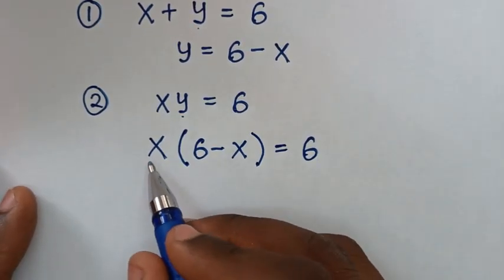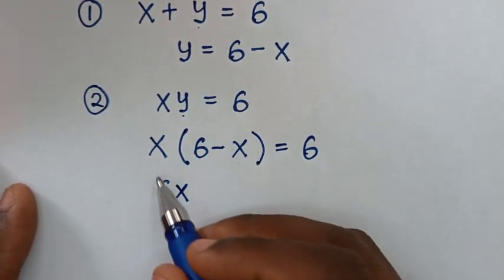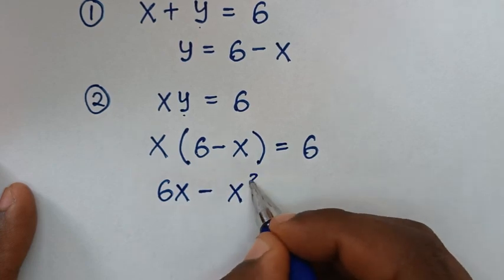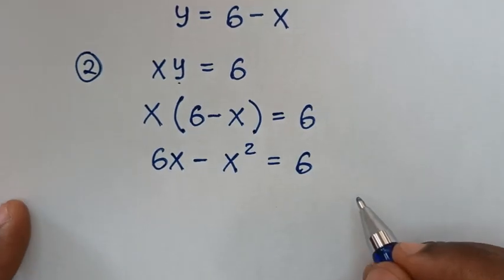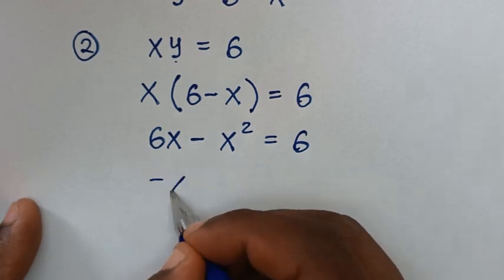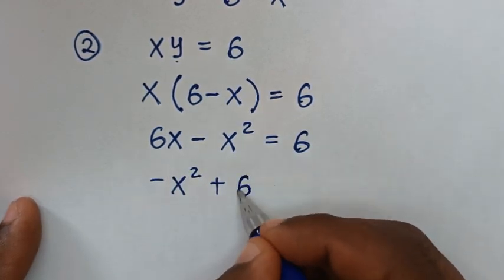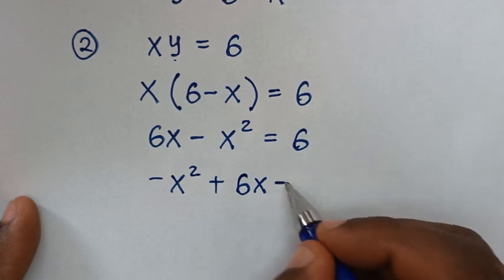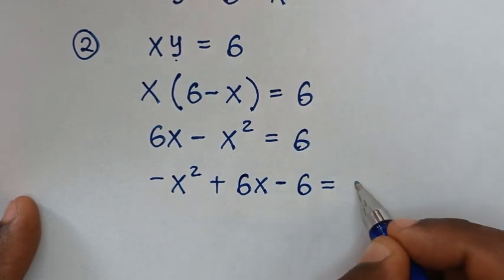Expanding the brackets: x times 6 is 6x, and x times negative x is negative x squared, giving us negative x squared plus 6x equals 6. Taking 6 to the left side gives us negative x squared plus 6x minus 6 equals 0.